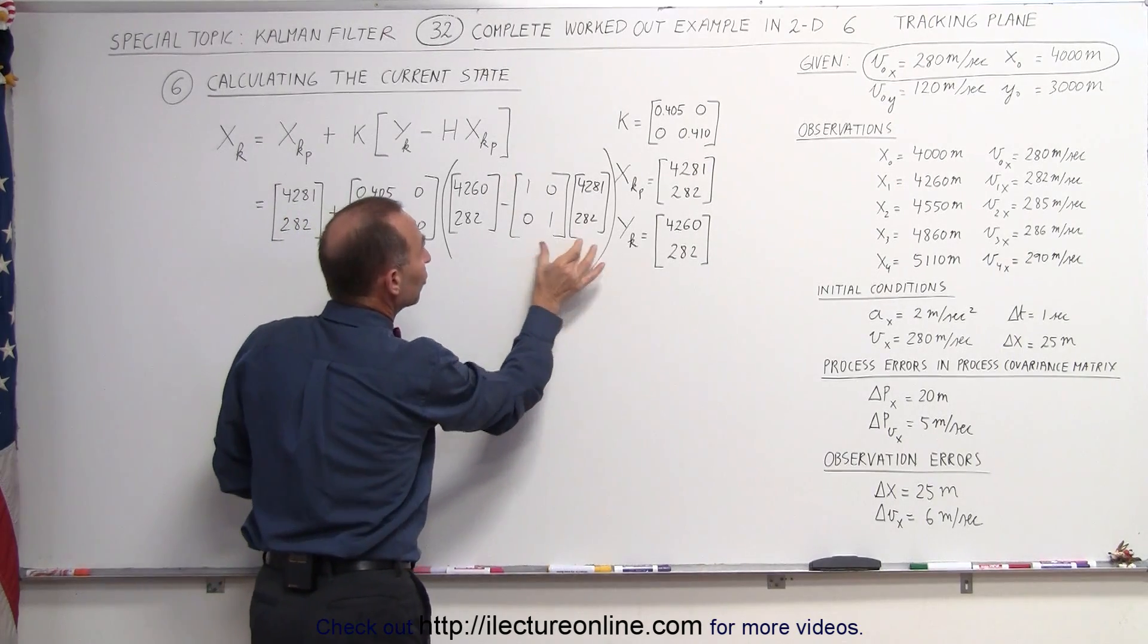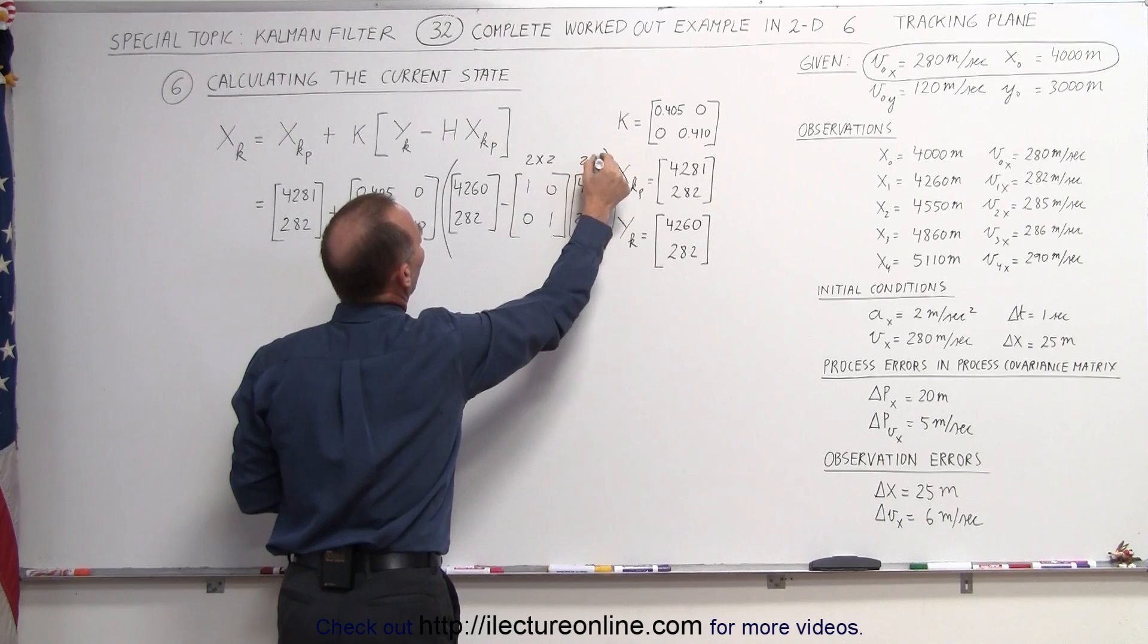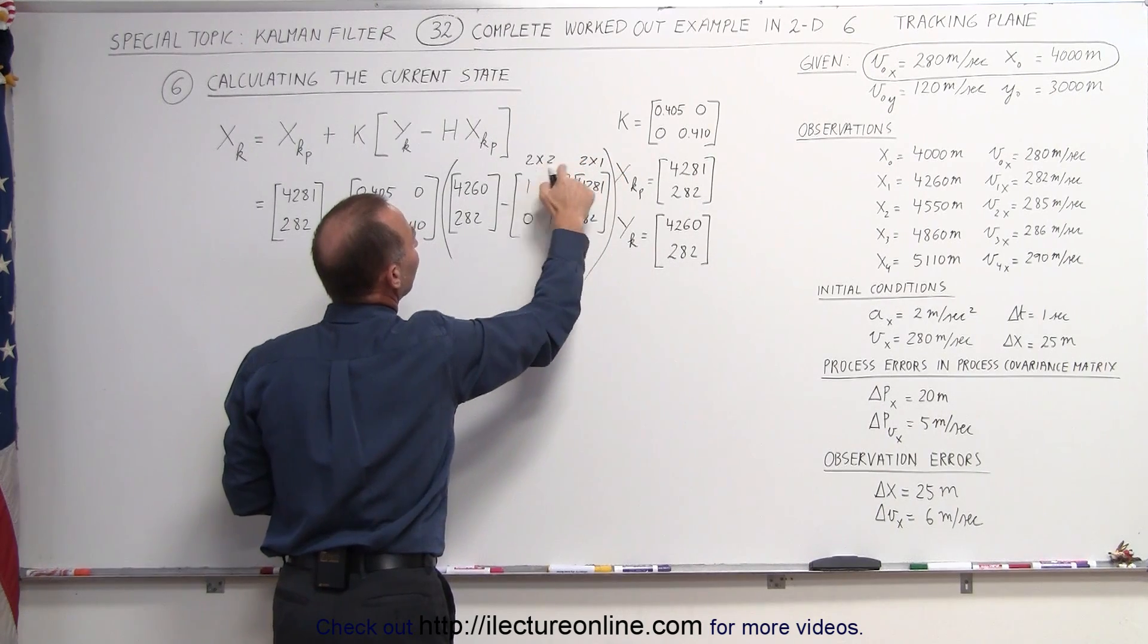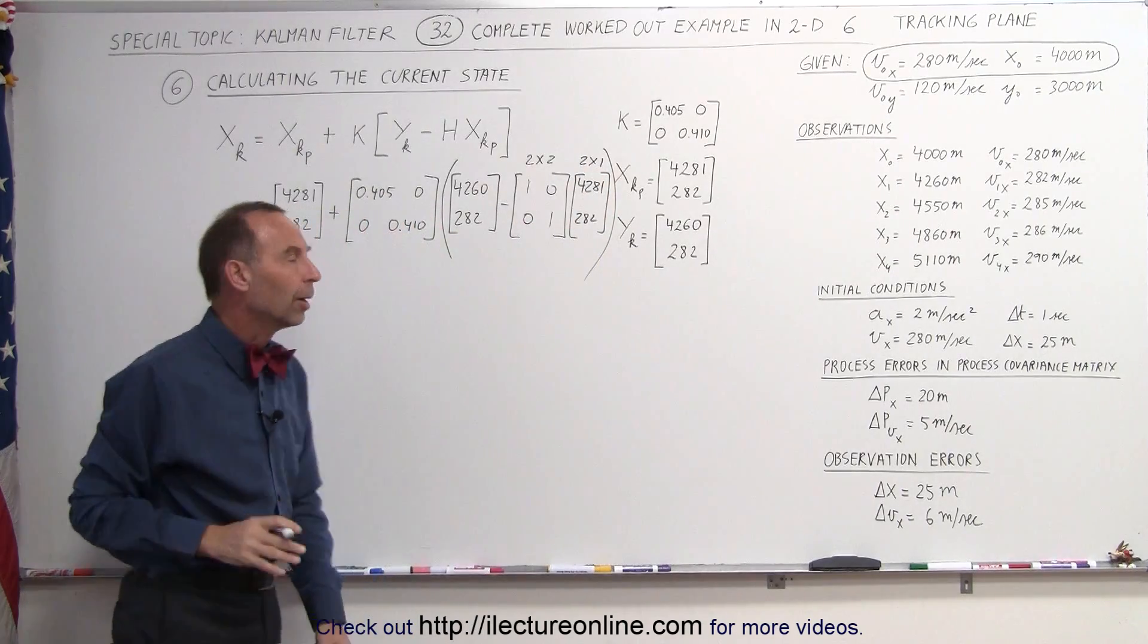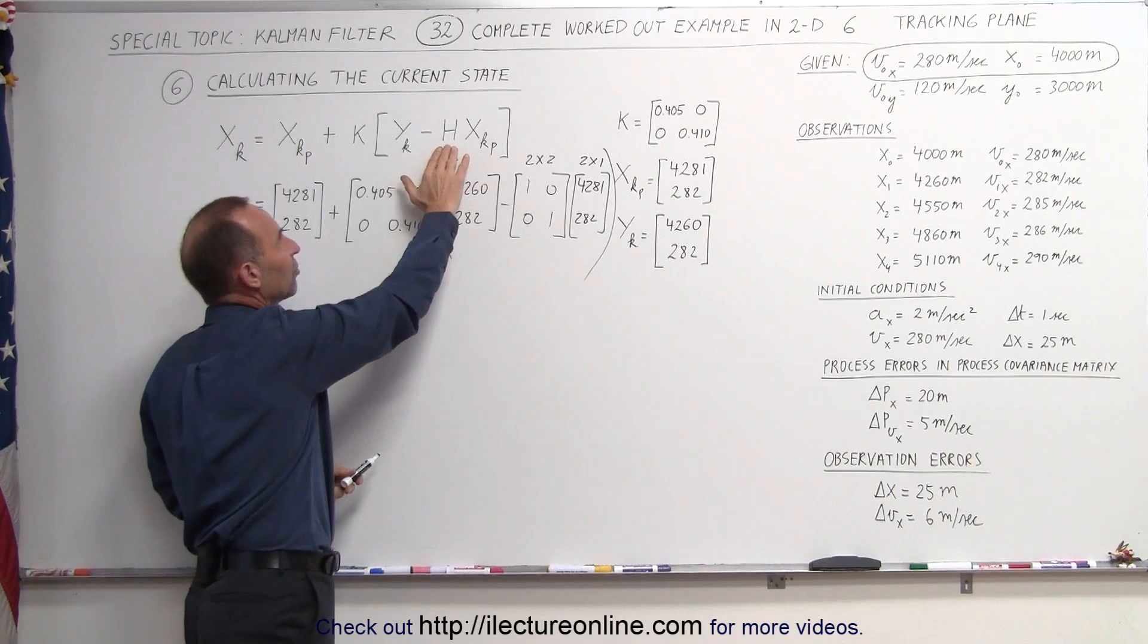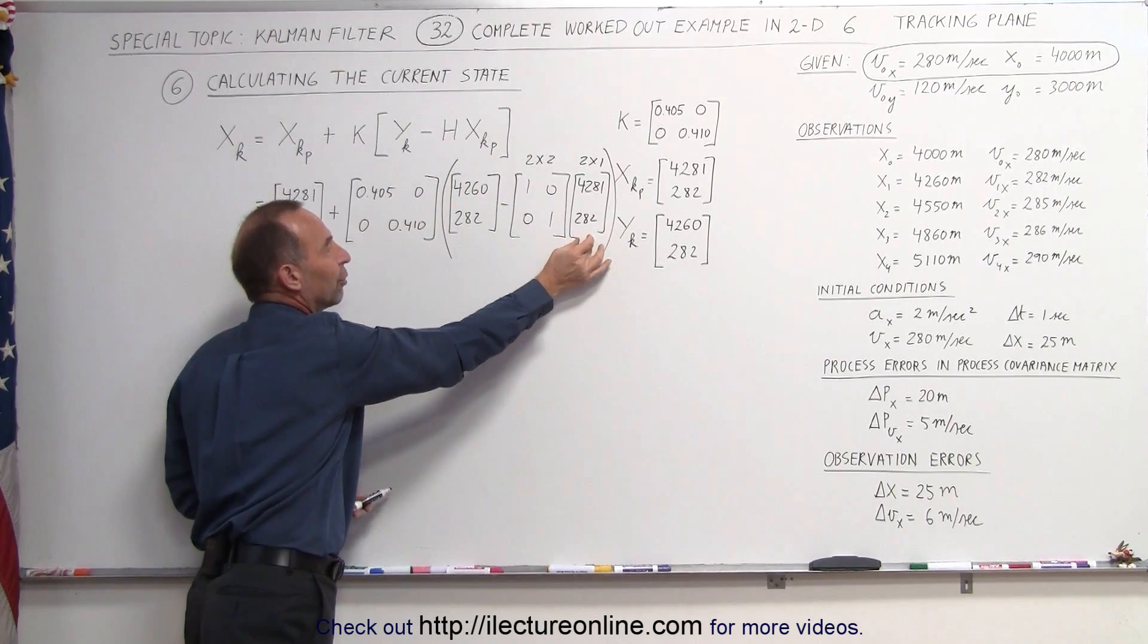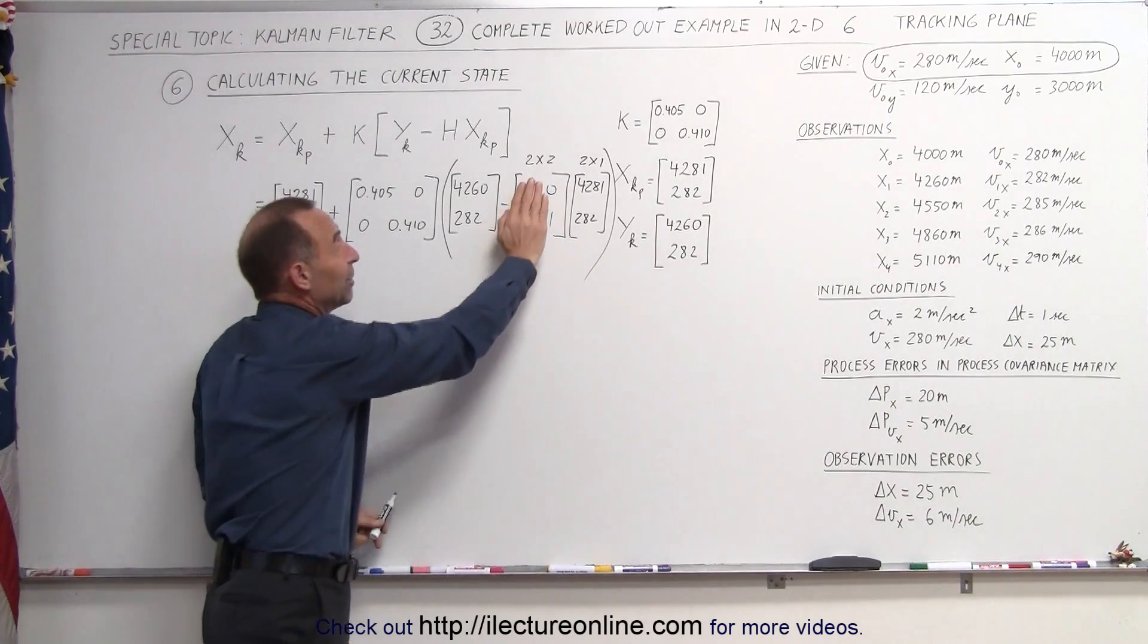When I multiply this matrix by this matrix, notice this is a 2 by 2, this is a 2 by 1. The 2 and the 2 says I can do the multiplication and I end up with a 2 by 1 matrix, what I want to end up with. These are simply transformation matrices that allow you to change one form of the matrix to another.